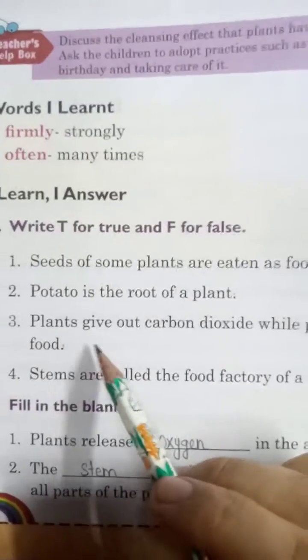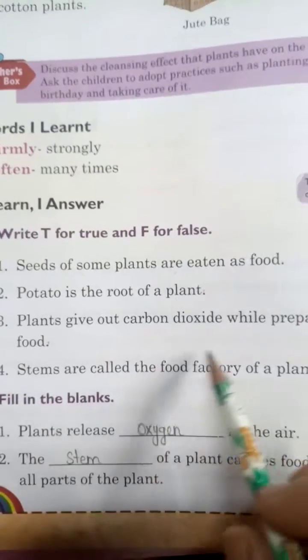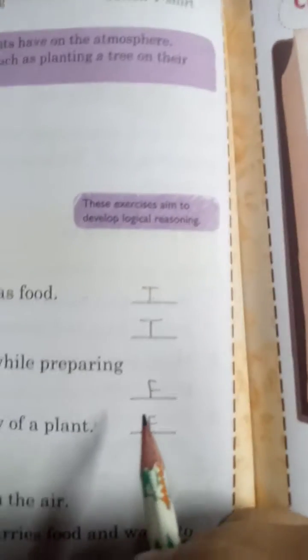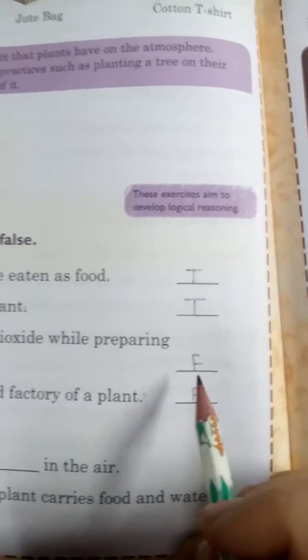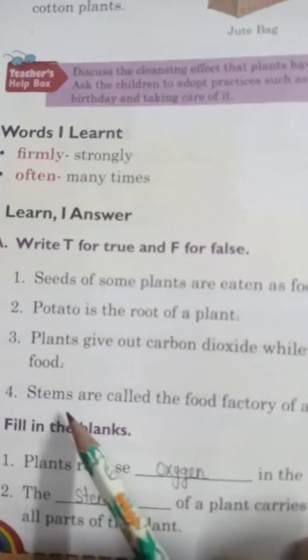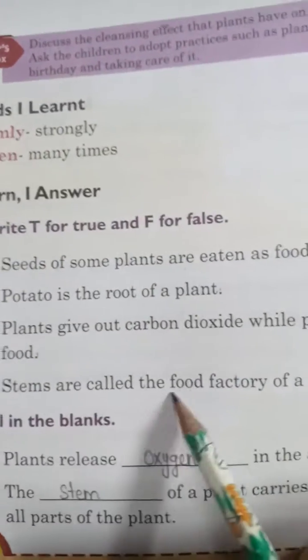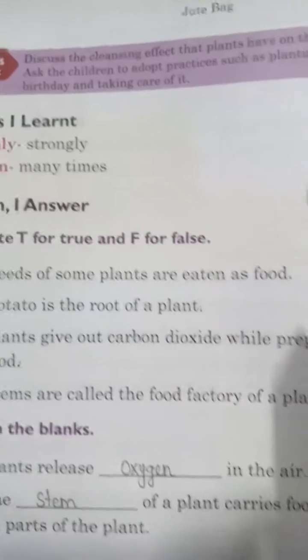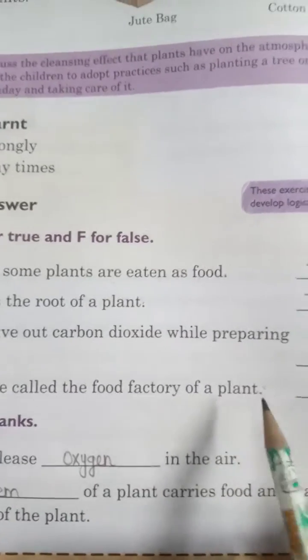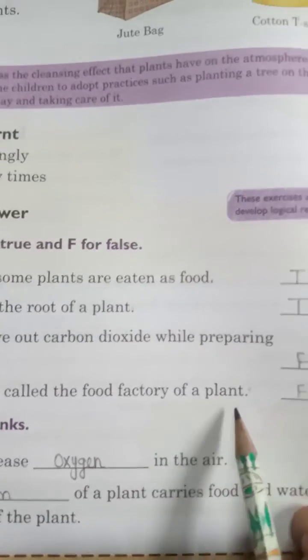Next: plants give out carbon dioxide while preparing food. Plants when making food, do they release carbon dioxide? No, because they release oxygen. So this statement is false. Next: stems are called the food factory of plants. No, because — look at it — this is also false.